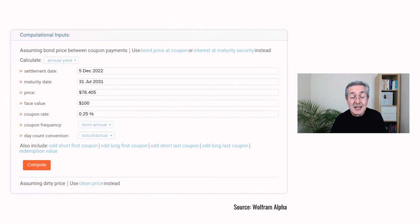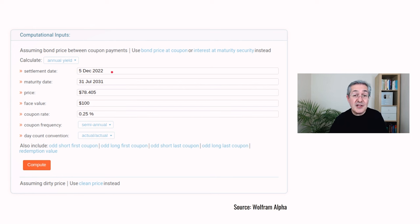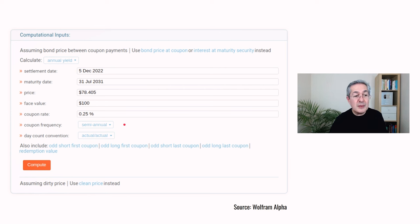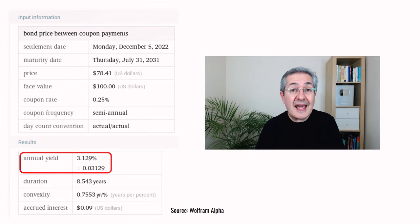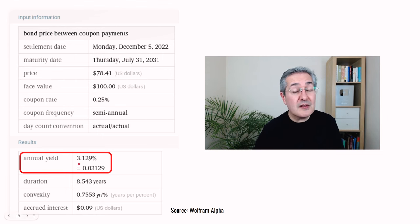If you want to work out the yield to maturity exactly, there are lots of calculators online. One of the best is from Wolfram Alpha. You enter all the trade details: the settlement date, the maturity date of 31st July 2031 for this bond, the price you pay today, the face value of 100, the coupon of 0.25%, the coupon frequency of twice per year for a UK gilt, and the day count convention of actual/actual. Out pops the annual yield — very close to our approximation of 3.15%, with the more precise answer being about 3.13%.